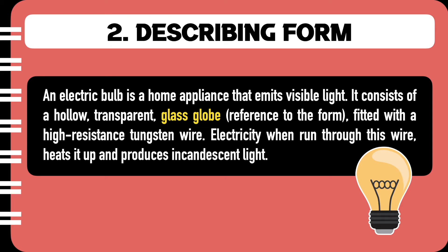An electric bulb is a home appliance that emits visible light. It consists of a hollow transparent glass globe. This is where we are trying to differentiate the electric bulb from the tube light by referring to the globe shape of the bulb.